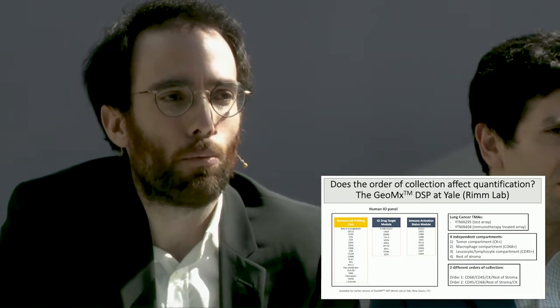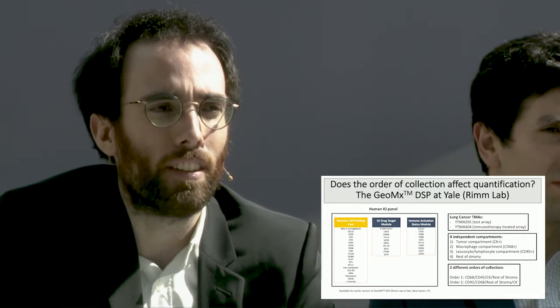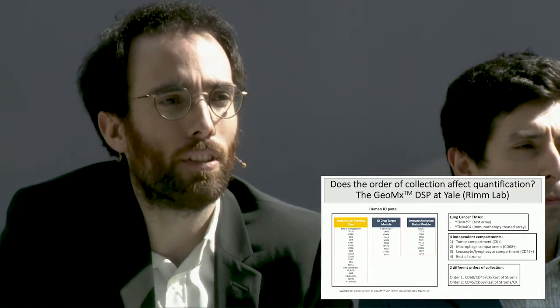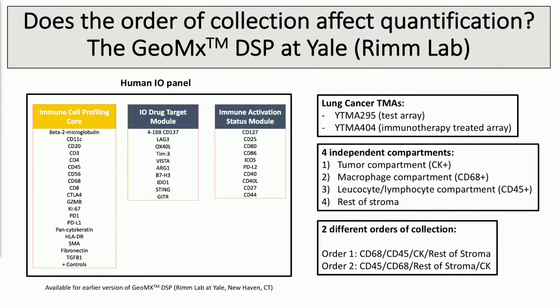After this first collaboration with Nanostring done entirely in Seattle, we got the instrument at Yale — a beta instrument since December — and we're starting to work on similar projects mainly in lung cancer. The panel has a total of 40 markers. We are focusing mainly on lung cancer, doing mostly TMA work. We are doing four independent compartments: the epithelial tumor cell compartment, the macrophage compartment with CD68, the leukocyte compartment with CD45, and a fourth compartment capturing the rest of the stromal cells.